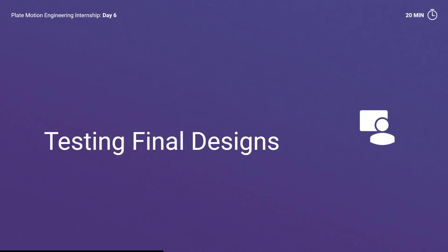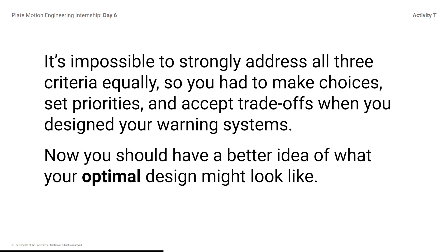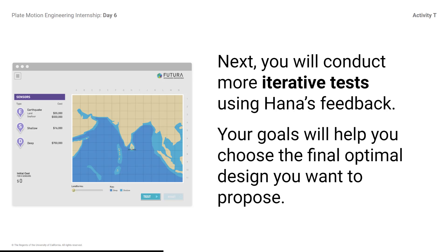Testing Final Designs. Optimal means most successful considering the situation. At Futura, we choose an optimal design based on evidence from many tests. It's impossible to strongly address all three criteria equally, so you had to make choices, set priorities, and accept trade-offs when you designed your warning systems. Now you should have a better idea of what your optimal design might look like. You will conduct more iterative tests using Hanna's feedback, and your goals will help you choose the final optimal design you want to propose. The objective for today's testing is to identify your optimal design, which may be one you already completed or a new one you test today.